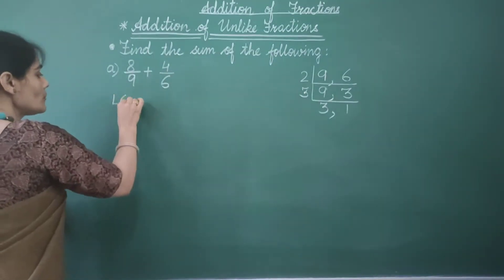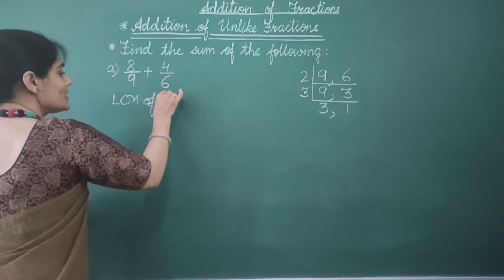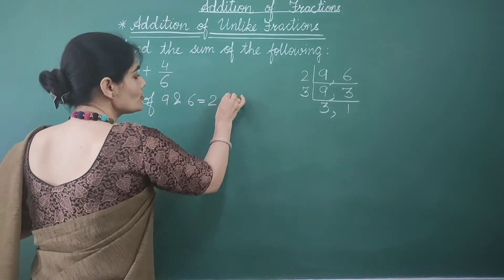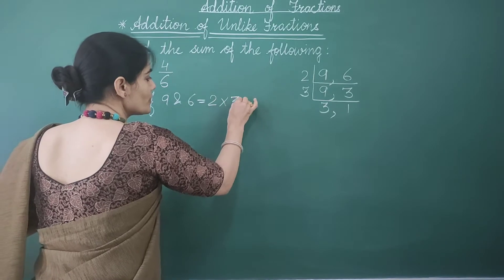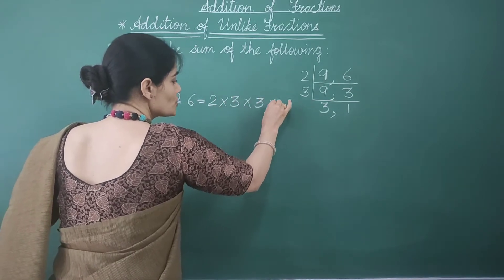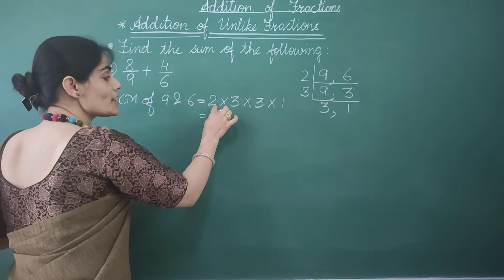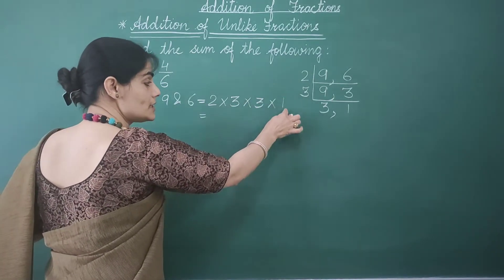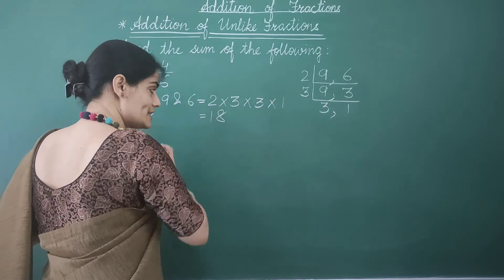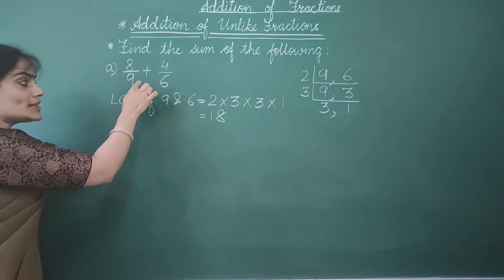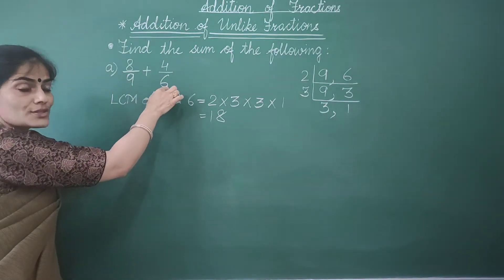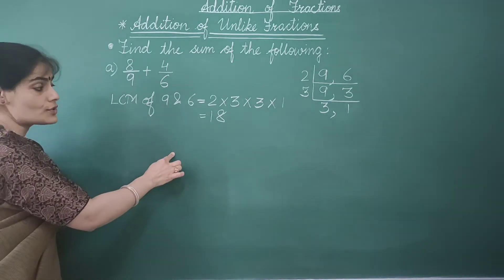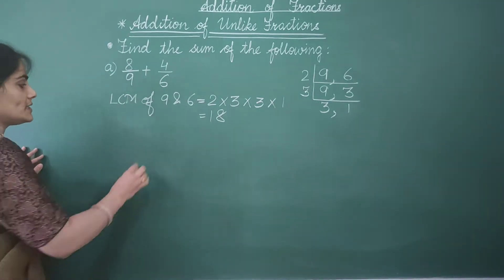So the LCM of 9 and 6 is equal to 2 × 3 × 3 × 1. Now 2 times 3 is 6, 6 times 3 is 18, and 18 times 1 gives us 18. Now let's convert these unlike fractions to their equivalent like fractions whose denominator should be equal to 18.